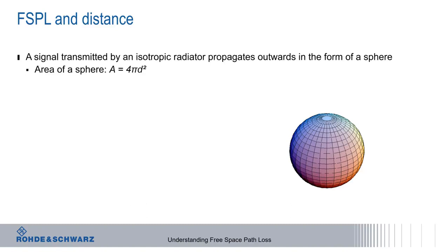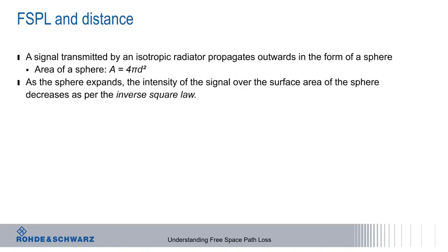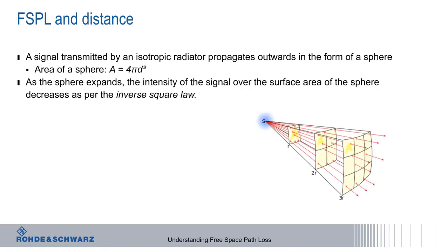You might be wondering why we're using d instead of r for radius. The reason is that in free space path loss equations, we use d to represent the distance from the source, which in this case is the center of our sphere. So as the sphere expands, that is, as the signal moves further away from the source, the signal intensity or power will decrease as per the inverse square law.